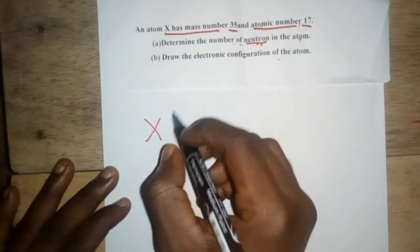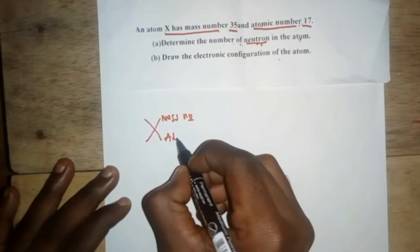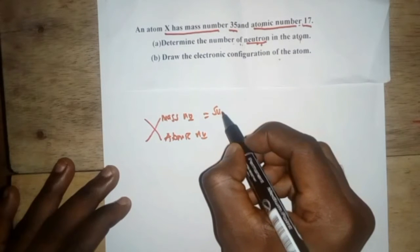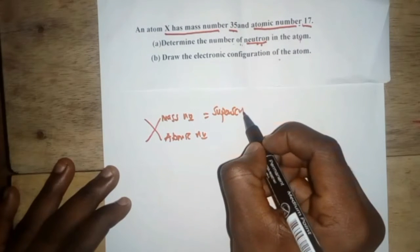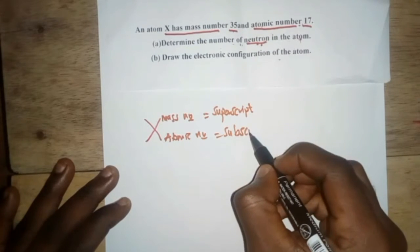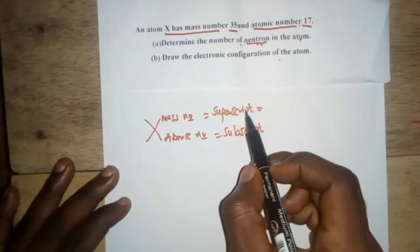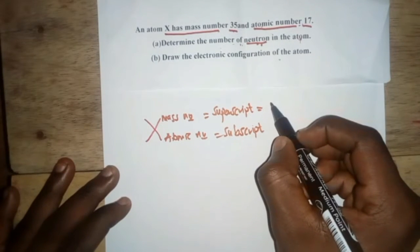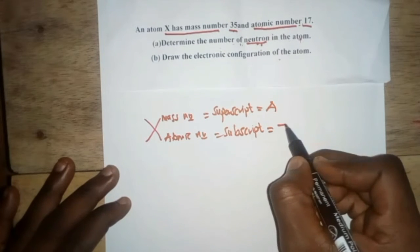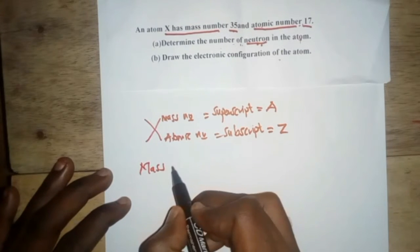For an element, the top number is the mass number and the bottom number is the atomic number. The mass number is also called the superscript, and the atomic number is the subscript. The superscript — the mass number — is represented by the letter A.